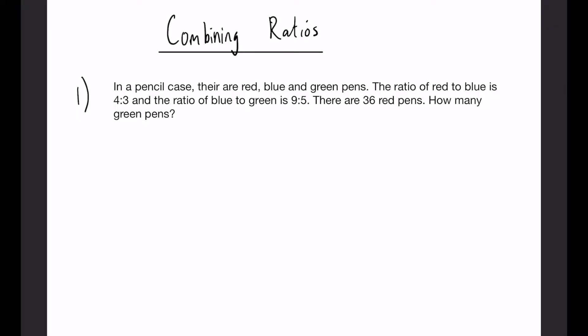So let's have a read of our question. In a pencil case there are only red, blue and green pens. The ratio of red to blue is 4 to 3 and the ratio of blue to green is 9 to 5. There are 36 red pens. How many green pens are there in the pencil case?